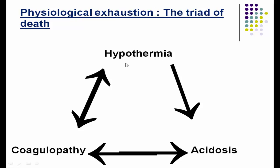Hypothermia causes coagulopathy and metabolic acidosis. Coagulopathy in turn causes metabolic acidosis and hypothermia. Metabolic acidosis causes coagulopathy, and coagulopathy again causes hypothermia, which again causes acidosis. In this way the triad of death forms a self-perpetuating cycle.